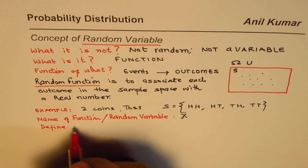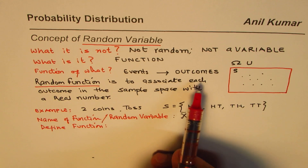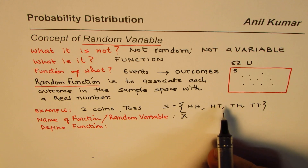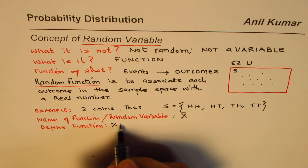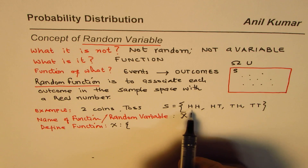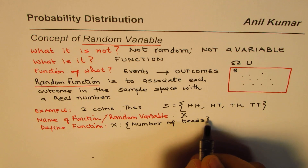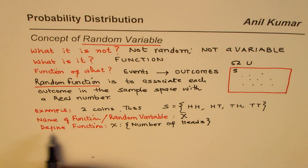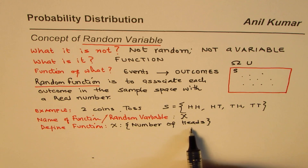The second part is defining the function. Defining the function means we are converting outcomes into numbers. So we define X as a function and the description is: number of heads. I could define it as number of tails, or difference of heads and tails — whatever you are interested in from the outcome.